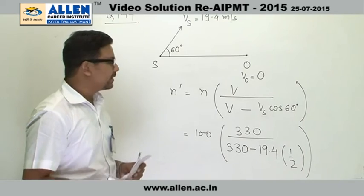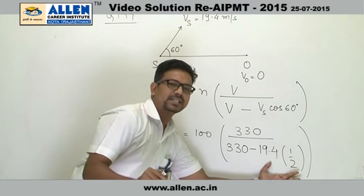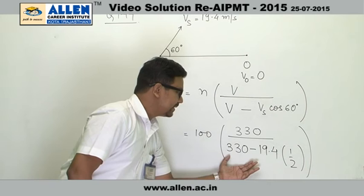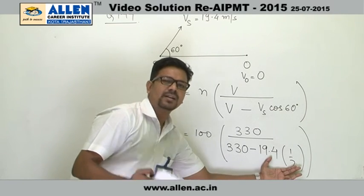If you solve this, this will come out to be 9.7, approximately 10. So 330 minus 10 that will be 320.